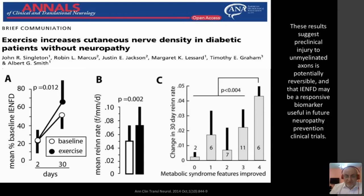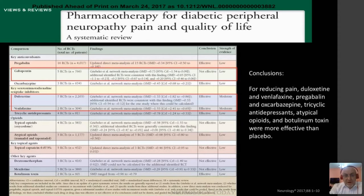A meta-analysis by the American Academy of Neurology identified the most effective pharmacotherapies. The most effective medications are SNRIs, including duloxetine and venlafaxine. Gabapentin was found not better than placebo — which is surprising — with very low quality of evidence. Pregabalin, lidocaine topical medication, and amitriptyline are all slightly better than placebo.